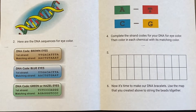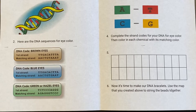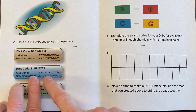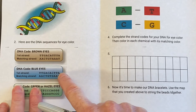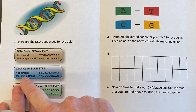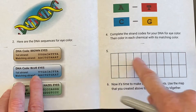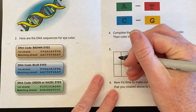We are going to figure out the DNA sequence for our own eye color. I'm going to show you my eye color and then have you do it on your own. My eye color is blue, so here's the first strand and the matching strand. I'm going to start with the first strand and transfer that information into these boxes.